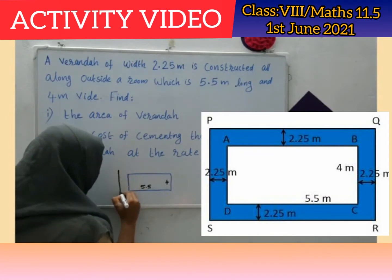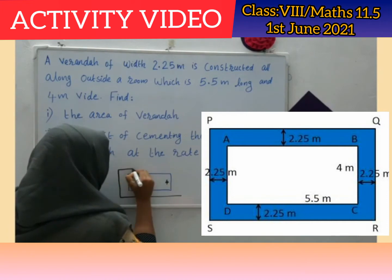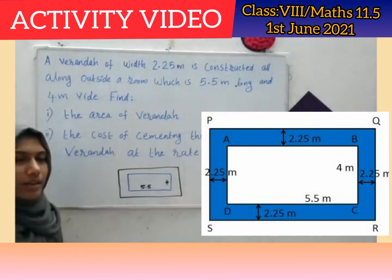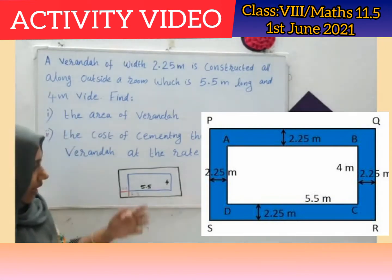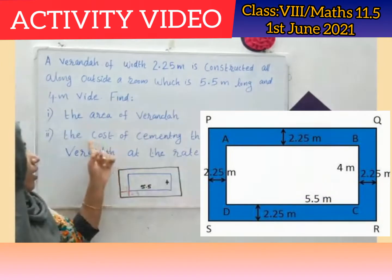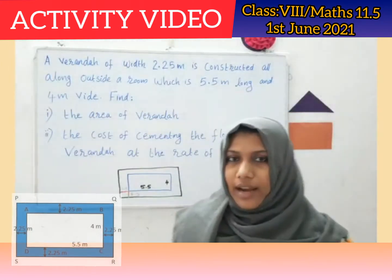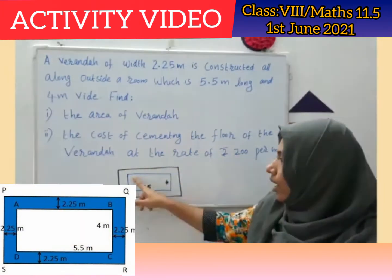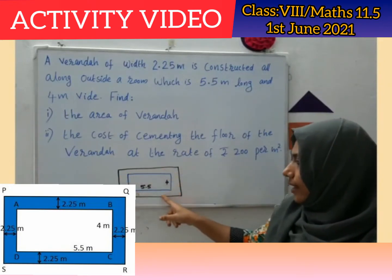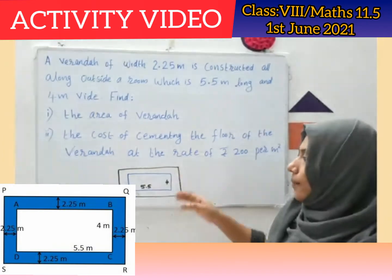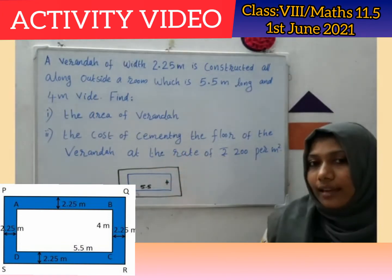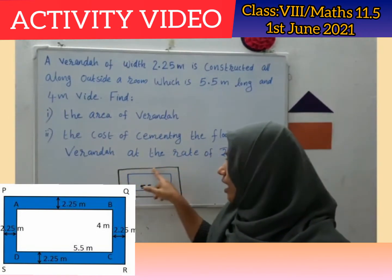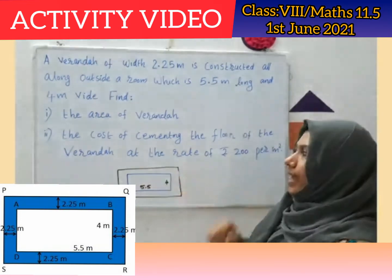Throughout all sides we are going to construct a veranda. This length is 2.5 on each side. So simply we can find out the area of the veranda. After constructing the veranda, we get a large rectangle. We already have the room as the small rectangle. So simply by subtracting the area of the small rectangle from the large rectangle, we get the area of the veranda portion.